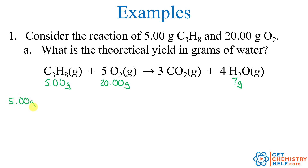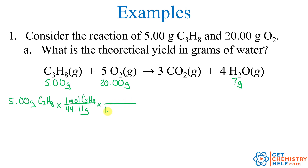We'll start with the 5.00 grams of propane. Whenever we have mass of a reagent, we want to turn that into moles using the molar mass. Going to the periodic table and adding up 3 carbons and 8 hydrogens gives 44.11 grams per mole of propane. Then we connect propane to water: from our balanced equation, for every 1 mole of propane, we produce 4 moles of water. Now we're in moles of water, but we want grams, so we use the molar mass of water — 2 hydrogens and an oxygen — which is 18.02 grams per mole.